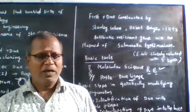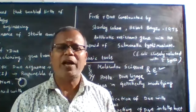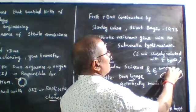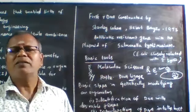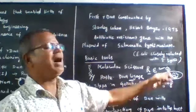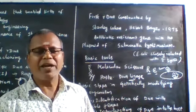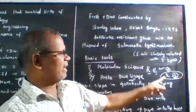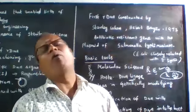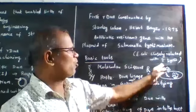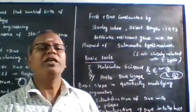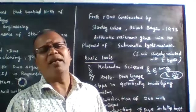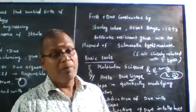Viruses that infect bacteria are known as bacteriophages. In the lytic cycle, or virulent cycle, the bacteriophage DNA enters the bacterial cell through absorption and penetration, then proliferates inside, causing the death of the bacterial cell. The main function of restriction enzymes in bacteria is to cut this invading viral DNA into pieces, making the virus harmless.